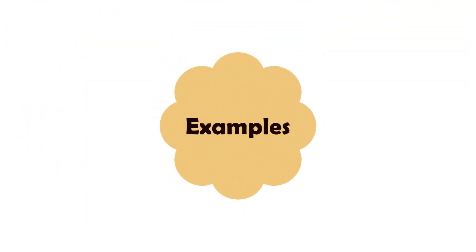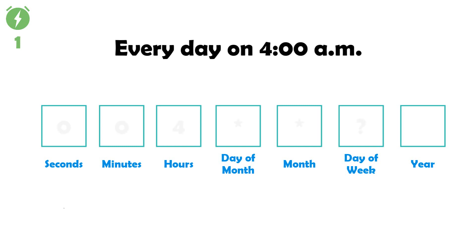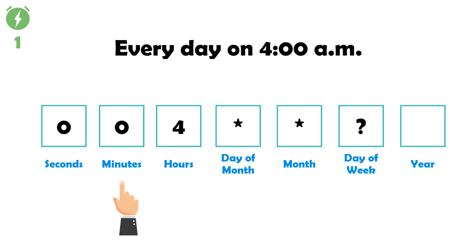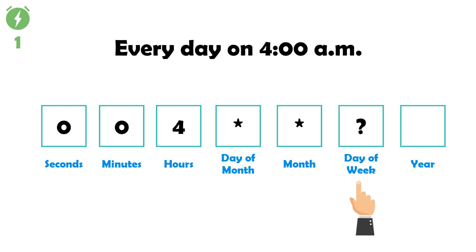Now I'm going to go through a few examples to show you how to use the cron expressions. First example: every day at 4 a.m. — '0 0 4 * * ?'. Zero in seconds, zero in minutes, four in hours, star in day of month means every day, star in month means every month, and question mark in day of week means no specific day is set.